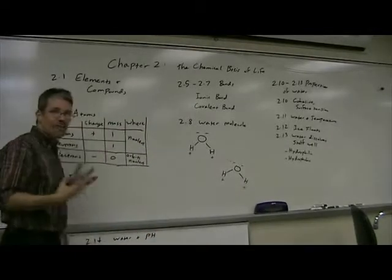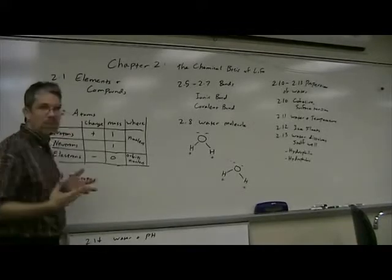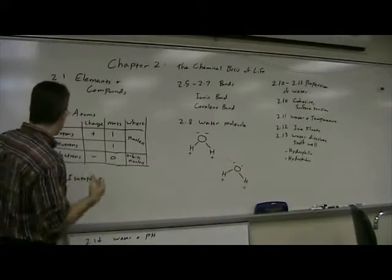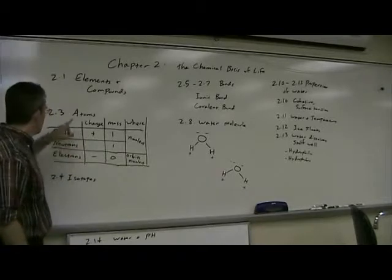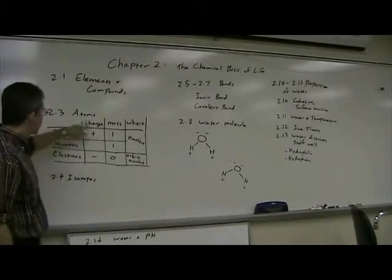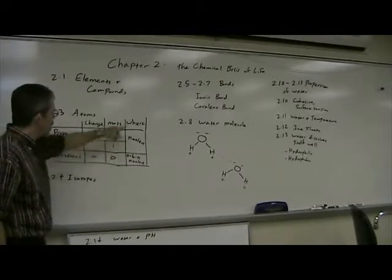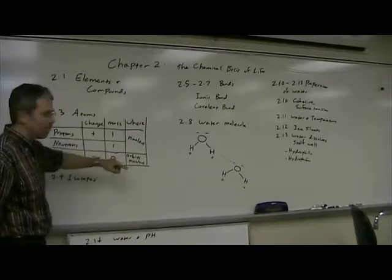Section 3 discusses atoms and the parts that they're made of: protons, neutrons, and electrons. Here's a little chart. Here we have protons, neutrons, and electrons, their electrical charge, their atomic mass, and where in the atom you will find them.